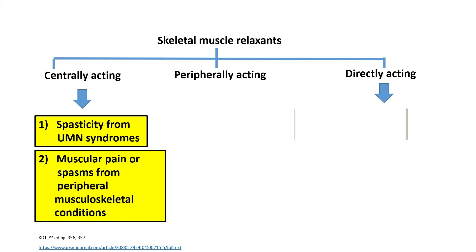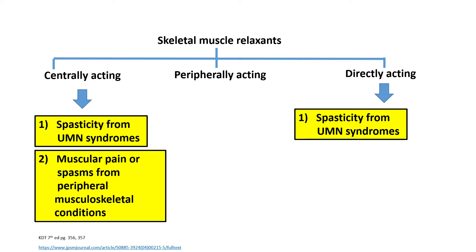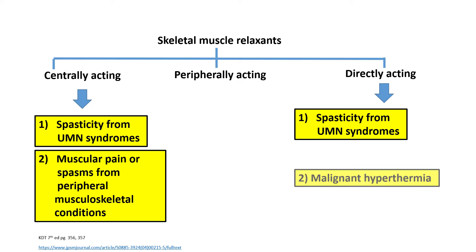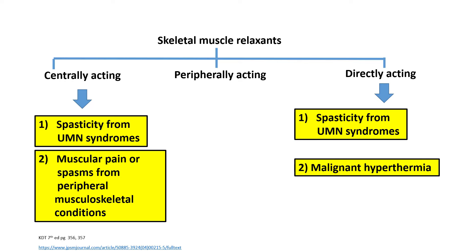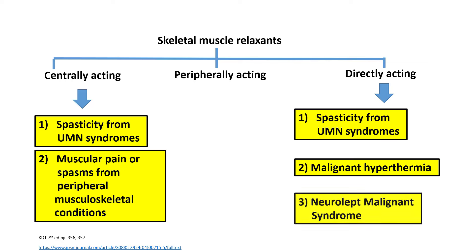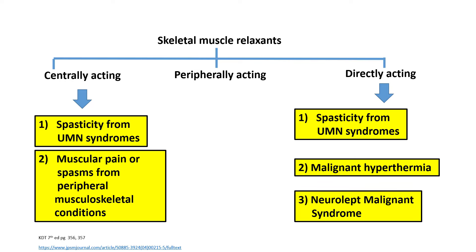Directly acting skeletal muscle relaxants are also used in the treatment of spasticity from upper motor neuron syndromes, for the management of malignant hyperthermia, and the management of neuroleptic malignant syndrome. A classical example of a directly acting skeletal muscle relaxant would be dantrolene.